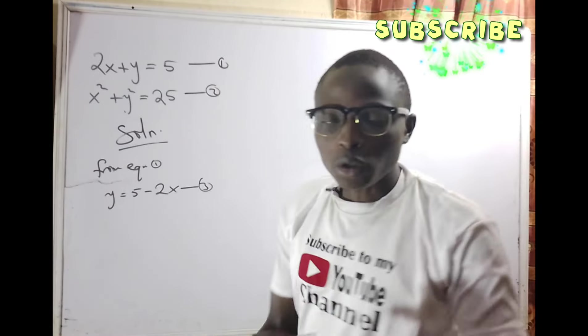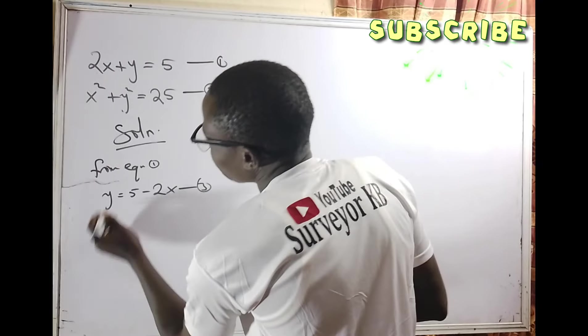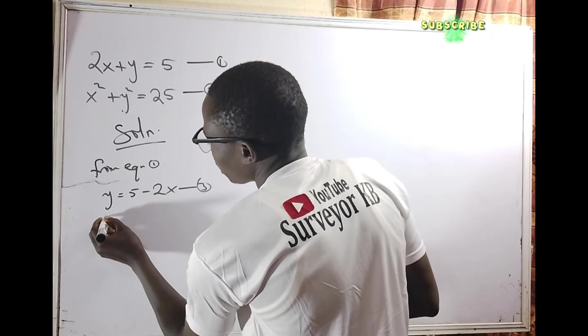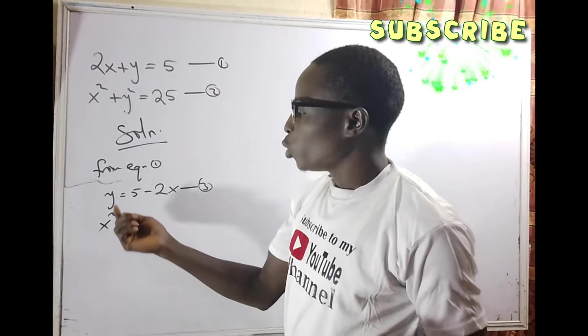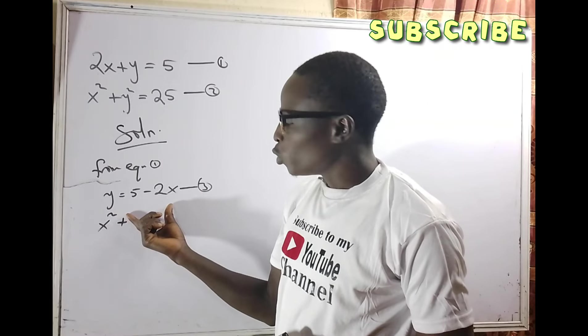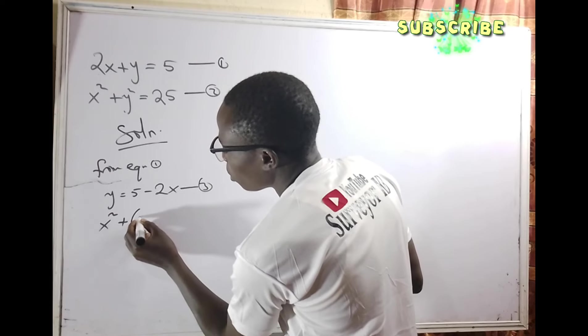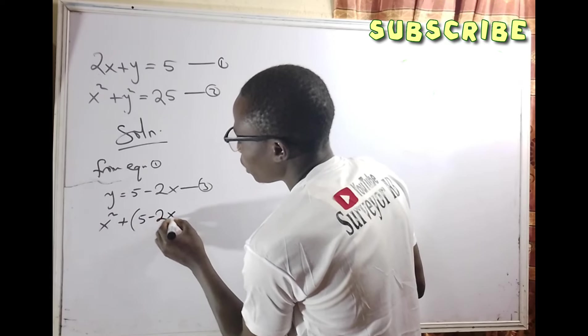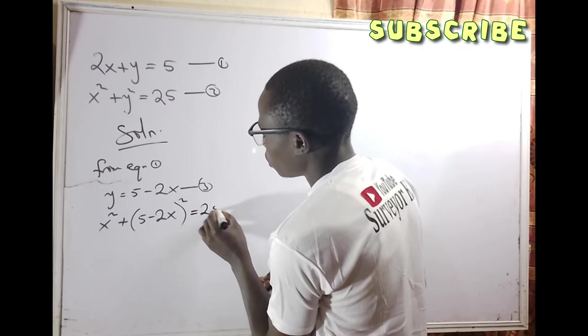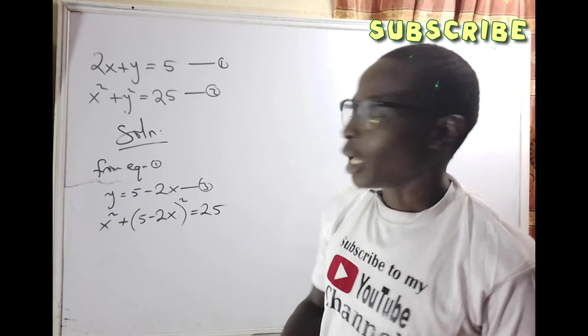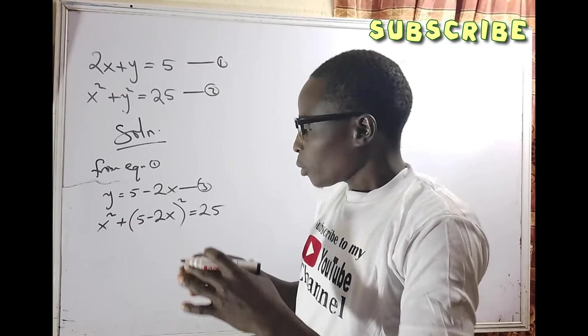Having done that, let's substitute for y in equation 2. We are going to relate equation 3 and equation 2. Equation 2 says x squared plus, instead of y, since we've already gotten the value of y to be 5 minus 2x, we put (5 minus 2x) whole squared equals 25.